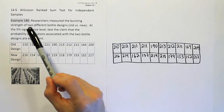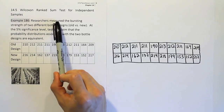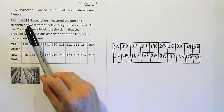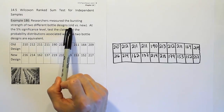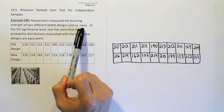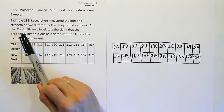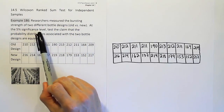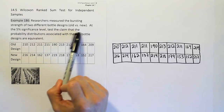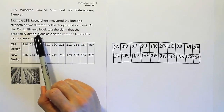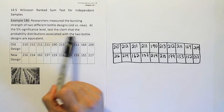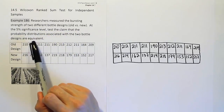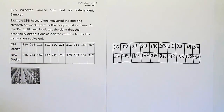Example 186. Researchers measured the bursting strength of two different bottle designs, the old bottles versus the new. At the 5% significance level, test the claim that the probability distributions associated with the two bottle designs are equivalent.